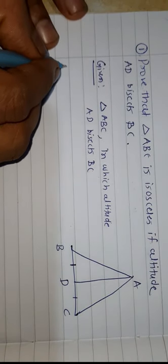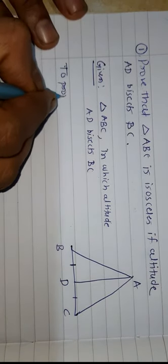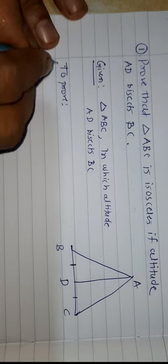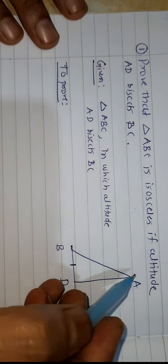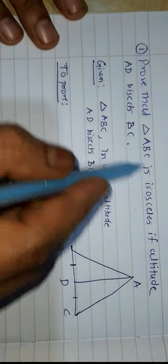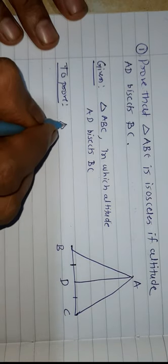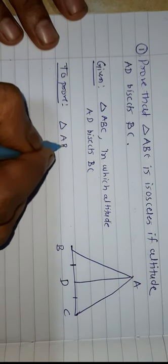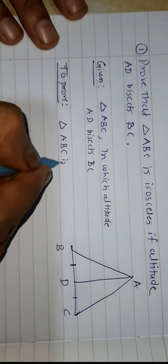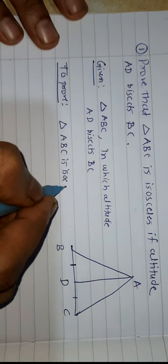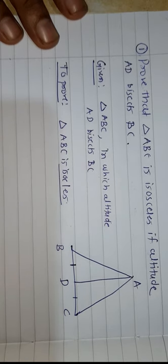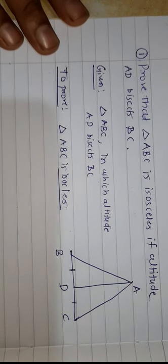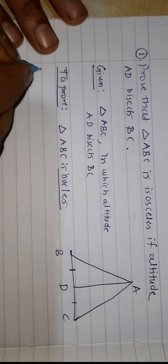Second is to prove: prove that triangle ABC is isosceles. Triangle ABC is isosceles — that is what we have to prove. That is our target. Now a very simple proof.